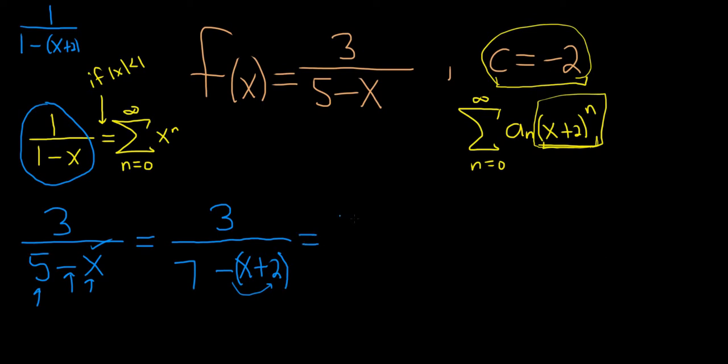So now we can pull out the 3, and we can pull out the 7. That leaves us with 1 over, on the bottom, we have a 1. Then minus, we pull out a 7 from the bottom. That's going to give us x plus 2 over 7, right? If you pull out a 7 from x plus 2, it's just x plus 2 over 7. And you can check that by actually working backwards. If you distribute the 7, you'll notice the 7s actually cancel.